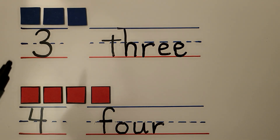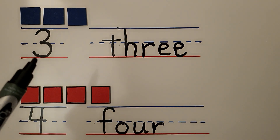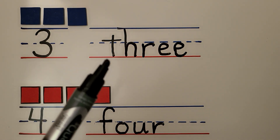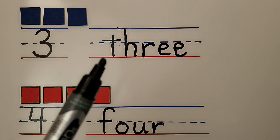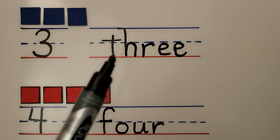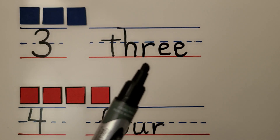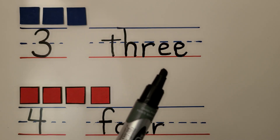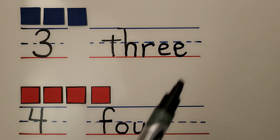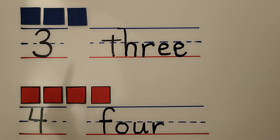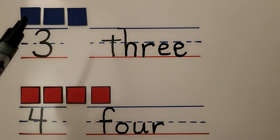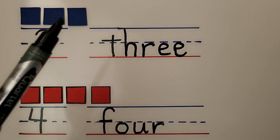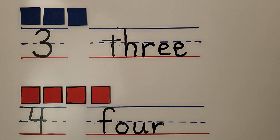Here we have the number three. Here we have the word three. The word three is T-H-R-E-E. We have one, two, three counters.